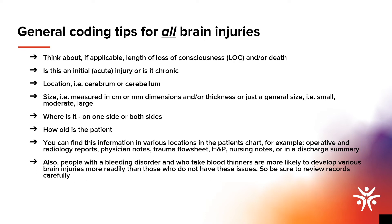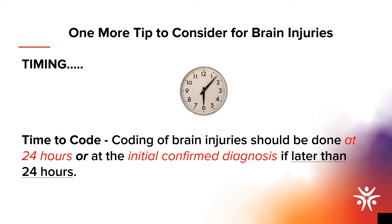This information can be found in various locations throughout the patient's EMR or chart. For example, the size and location of the injury can typically be found in a radiology report or operative note, whereas the patient's loss of consciousness status and age can be found in a nursing note or an H&P. It is also important to be aware if the patient has a bleeding disorder or takes blood thinners, as injuries may develop or grow after arrival. Coding of brain injury should be done at 24 hours or at an initial confirmed diagnosis if later than 24 hours, so be sure to review follow-up imaging and notes around that 24-hour mark.